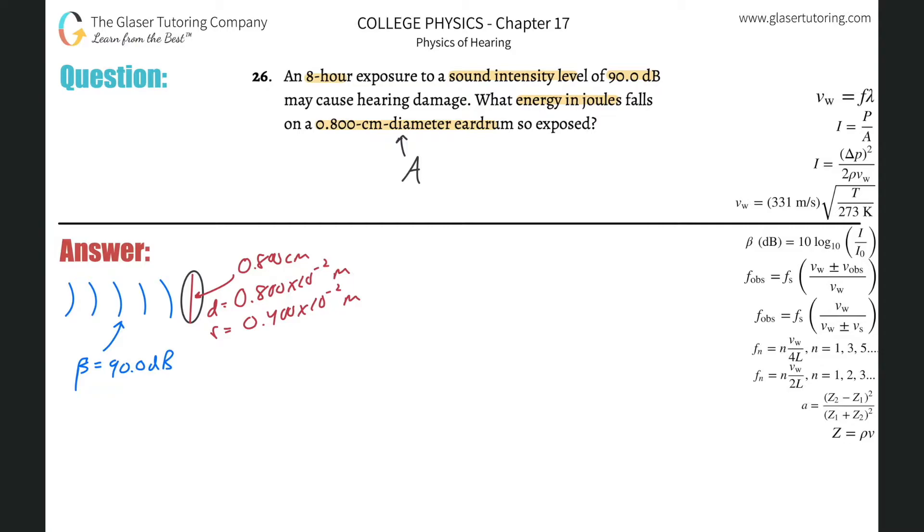The next thing is, I start looking at: they gave me sound intensity level. So they gave me a beta value. Then I start asking myself about the question: what energy in joules? And I start thinking, well, energy is energy. They told us in joules. But how is energy related to this stuff? That's the key.